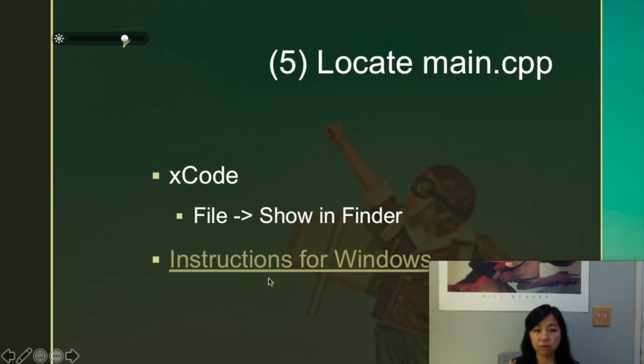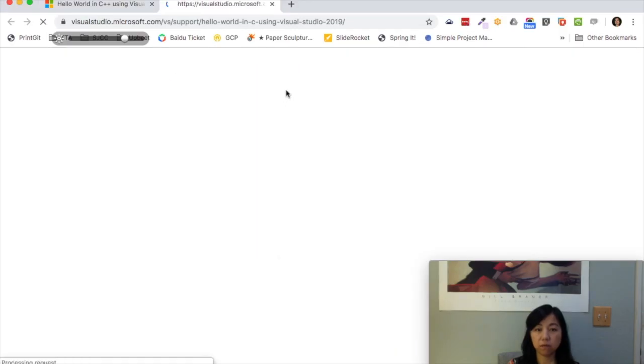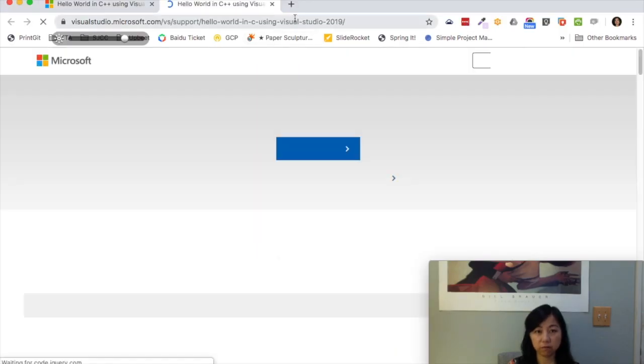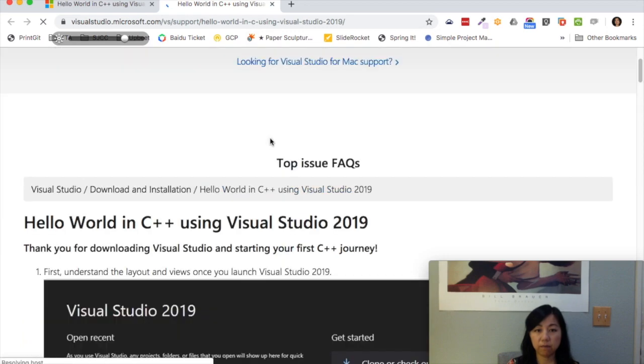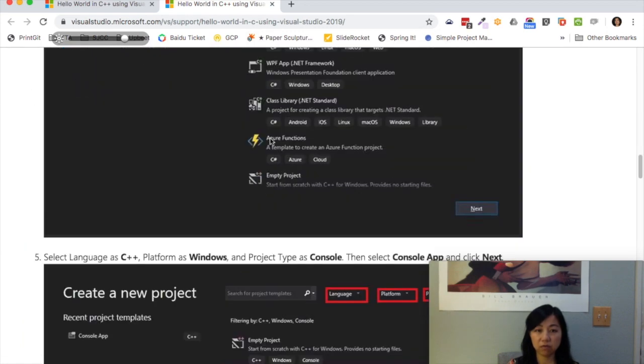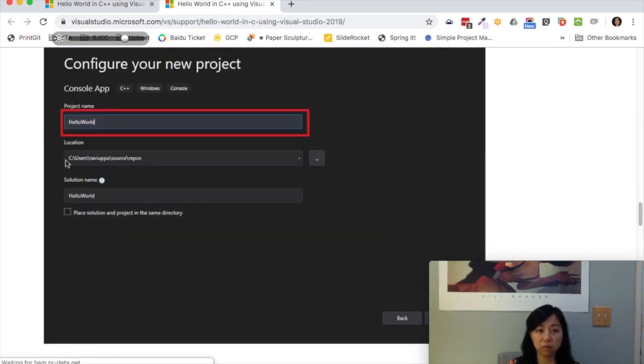And then for windows, this is a link that we have in previous slides. Basically if you look at the instruction, how to create a new project somewhere in the line, you have to locate where your project will be at and that's the location. And so underneath here, you will find your main dot CPP.